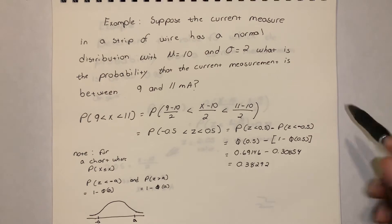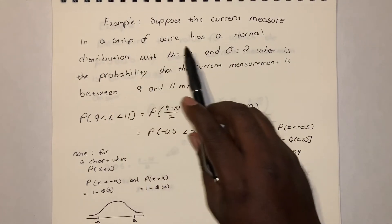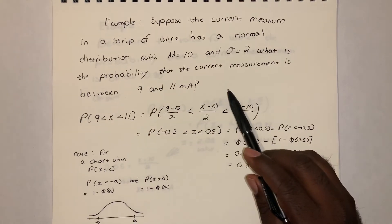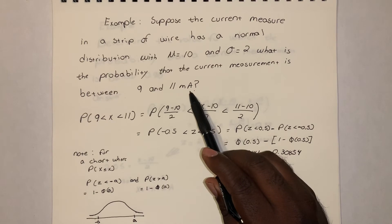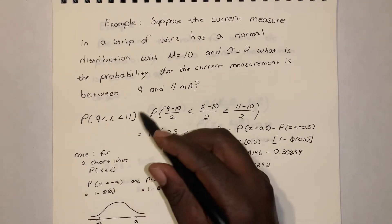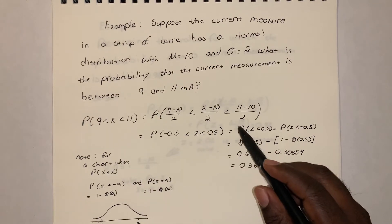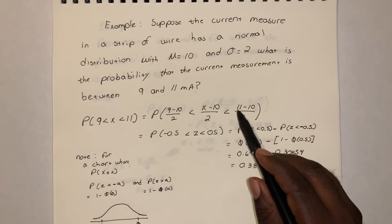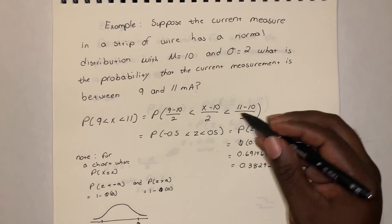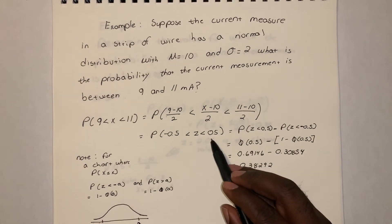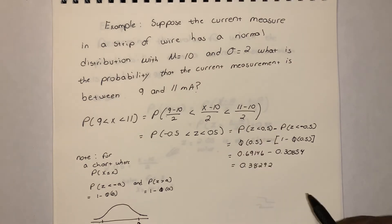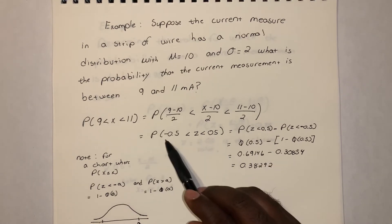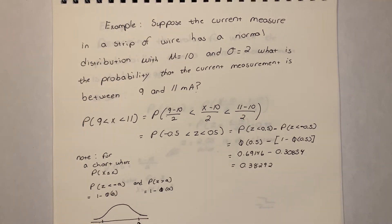Example: suppose the current in a strip of wire has a normal distribution with μ = 10 and σ = 2. What's the probability the current is between 9 and 11 milliamps? We want P(9 < X < 11). Converting to Z-scores: (9 − 10)/2 < Z < (11 − 10)/2, which gives −0.5 < Z < 0.5. To find this we compute P(Z < 0.5) minus P(Z < −0.5).